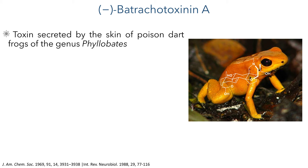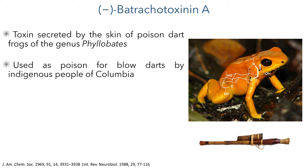Batteritotoxinin A is part of a family of toxic compounds secreted by the skin of the poison dart frogs of the genus Phyllobates. These secretions are used as poison for blow darts by indigenous people of Colombia and other regions of South America.